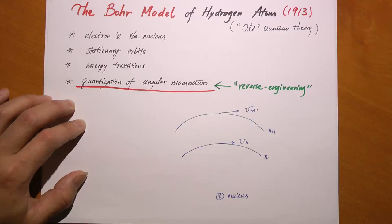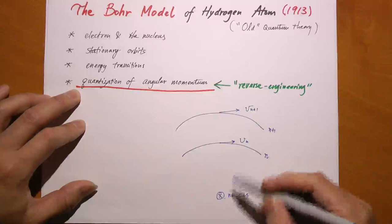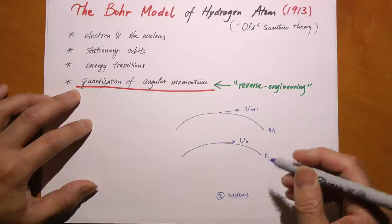Because of the Rutherford experiment, in the Bohr model you don't have a uniform distribution of positive charges anymore, as in the plum pudding model. Rather, you have electrons going around the nucleus, which is very small. So you have a nucleus here, with the electron going around it in circular orbitals.